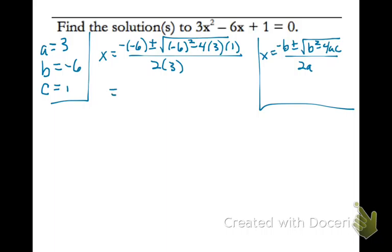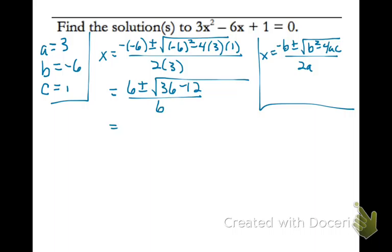Now let's simplify. The negative of negative 6 is positive 6 — negative times a negative is a positive. Plus or minus the square root of negative 6 squared, which is 36. 4 times 3 times 1 is 12, so minus 12, all divided by 6. Keep simplifying: 36 minus 12 is 24.